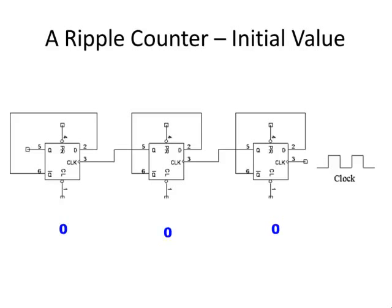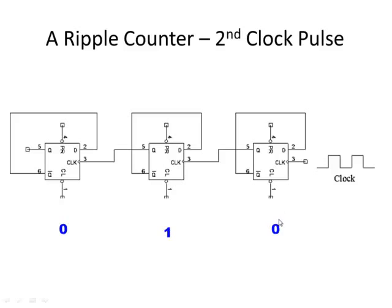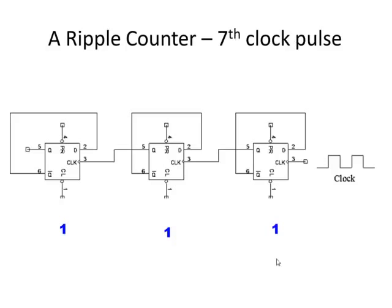Its initial value starts out with all 0s — so we have 0, 0, 0 out of the ripple counter. When the first clock pulse comes in, it causes the ripple counter to count up to 1. The next clock pulse causes this to go to 0 and the count rolls over, giving us 0, 1, 0 — that's binary 2. Pulse again, we get 3; pulse again, we get 4. Fast-forward until the 7th pulse, and we get 1, 1, 1 — the binary equivalent of 7.